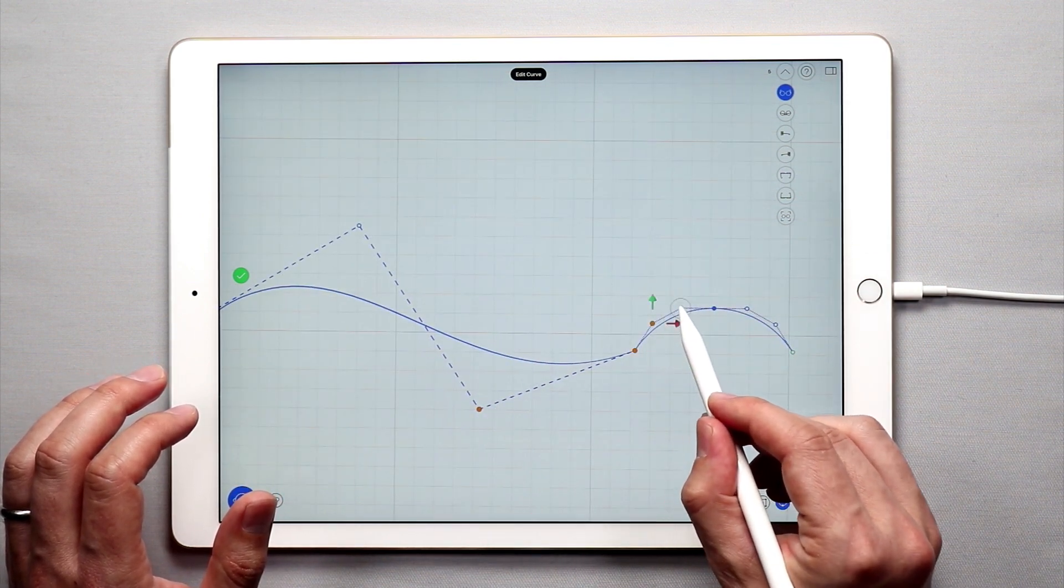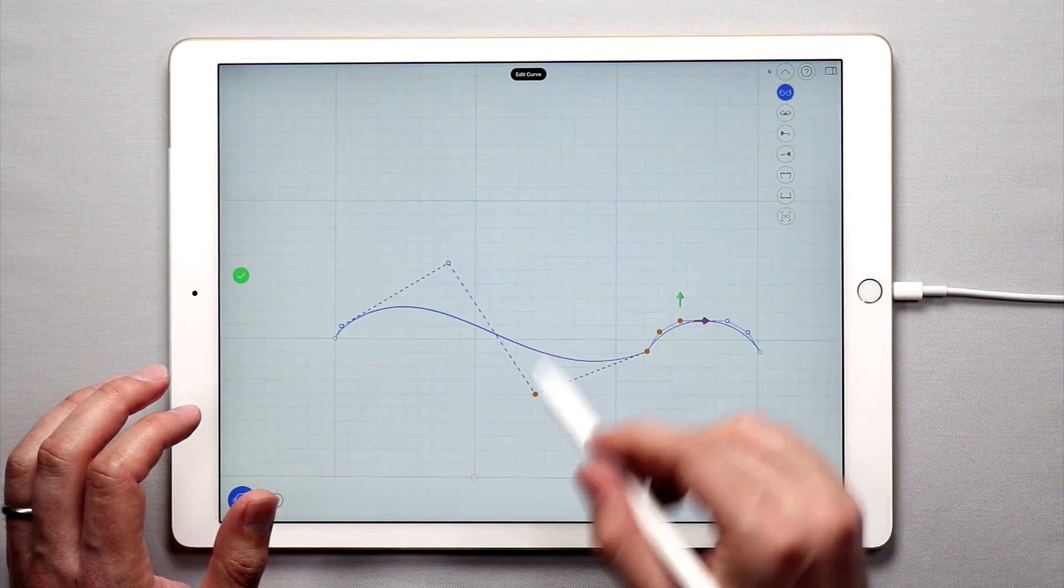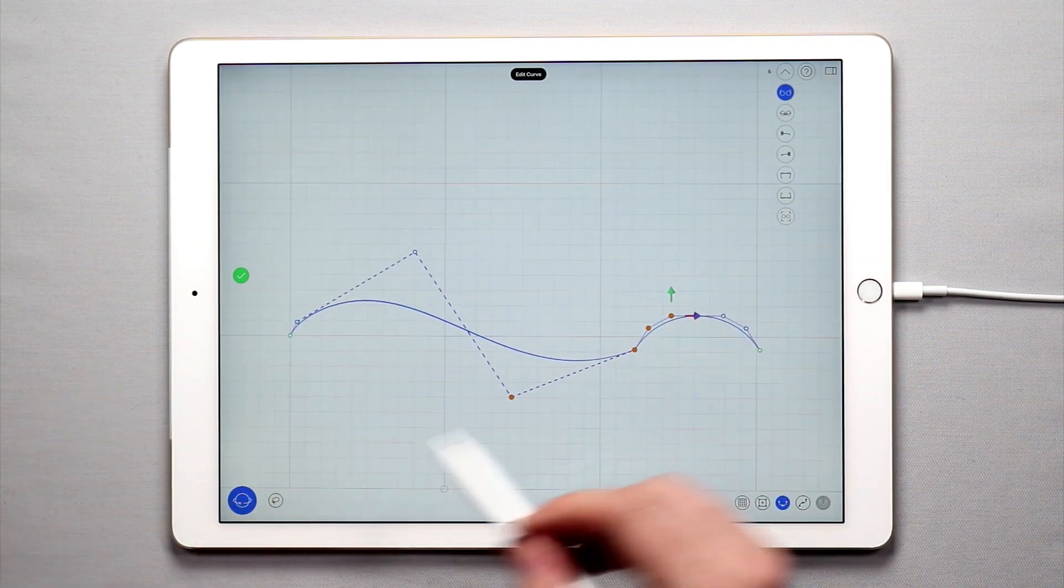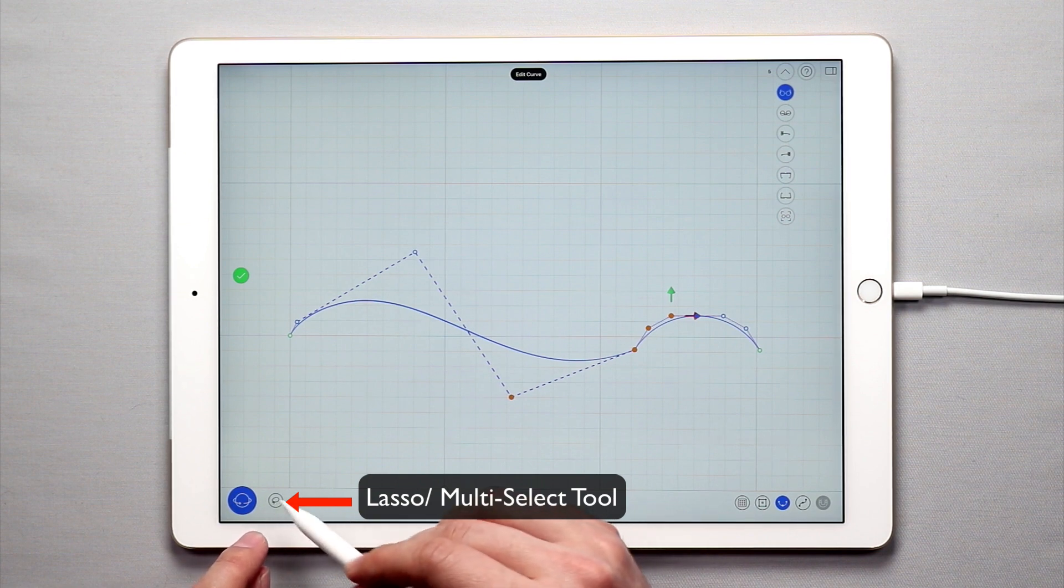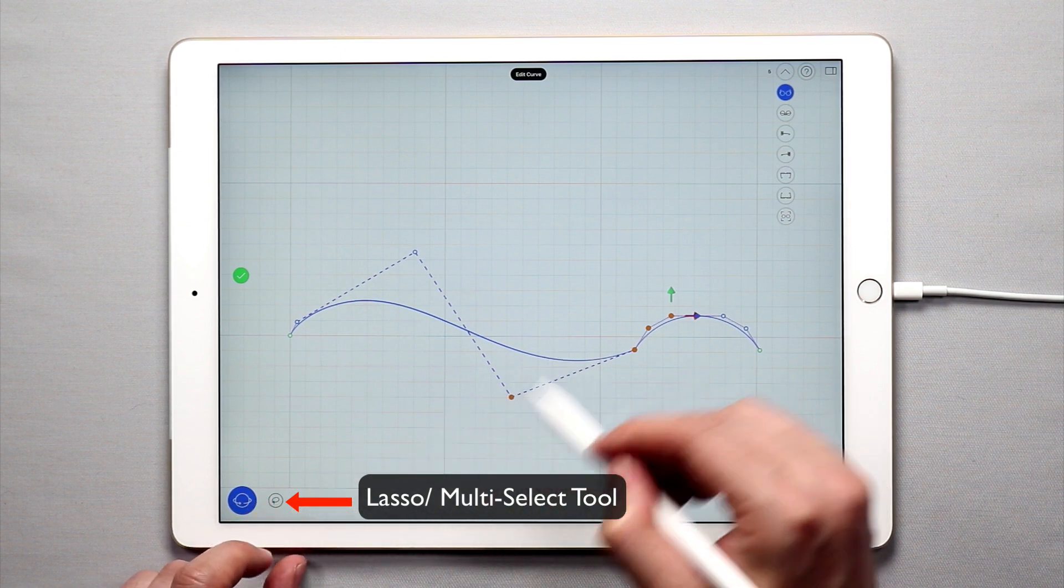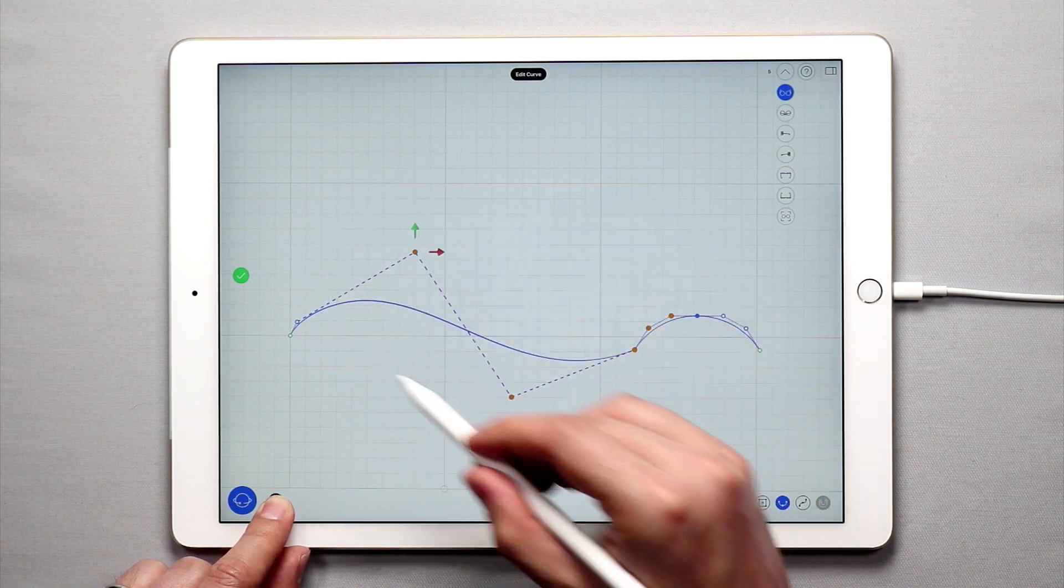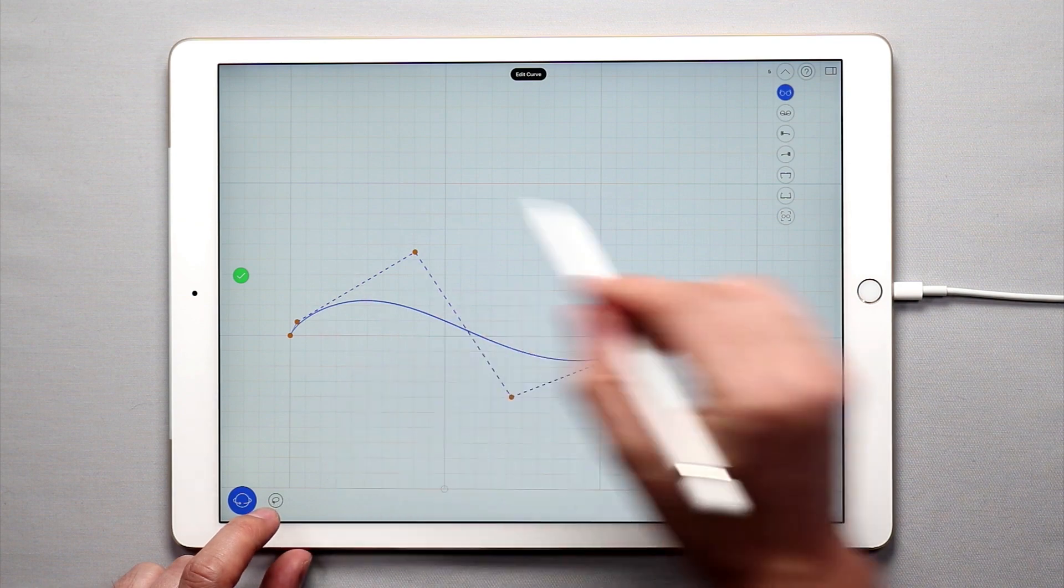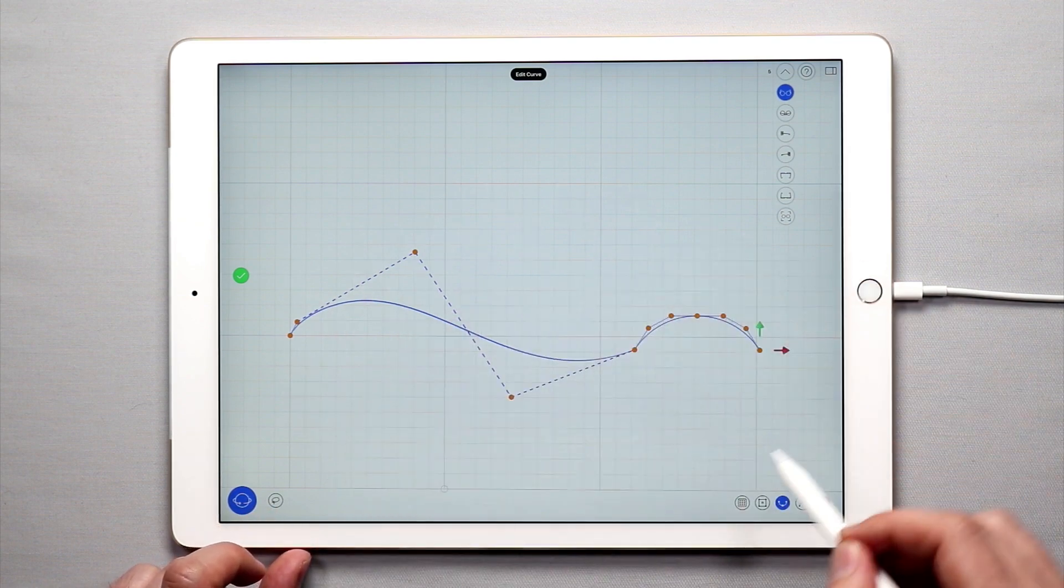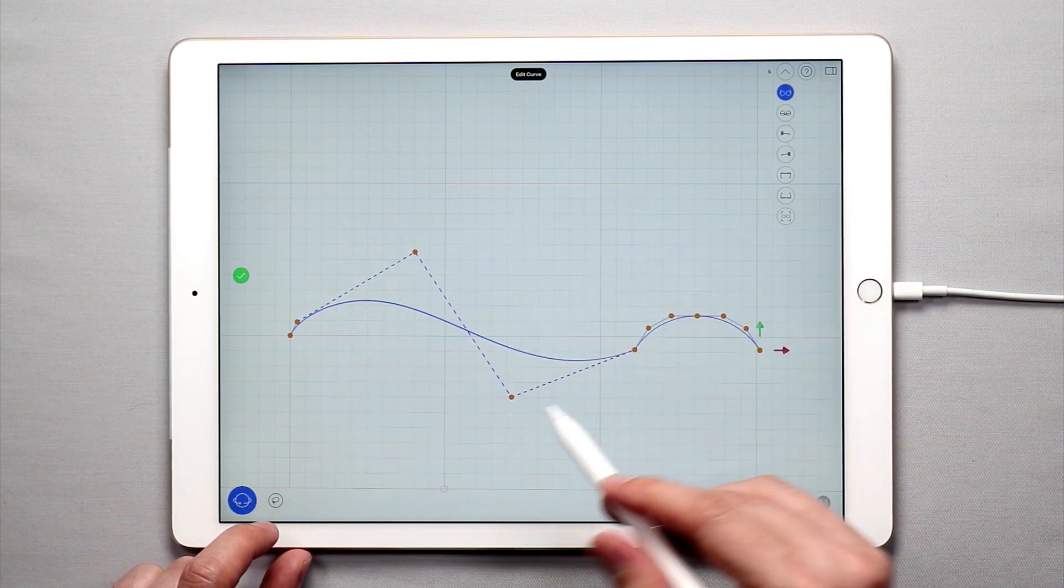If I double tap and select multiple points again, if I want to deselect those I can actually use the lasso tool in a very interesting way. Remember there's this lasso tool that we can use for multi-selection. We can actually use this tool to select multiple points. If I draw a selection around all the points, I can select all the points on this curve, but I can also use it to